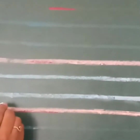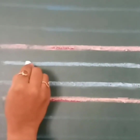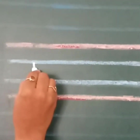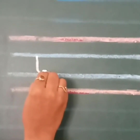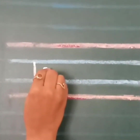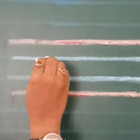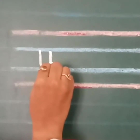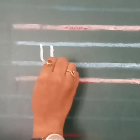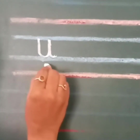Now let's see how to write script letter U. From the first blue line to the second blue line, make a standing line. Curve on the second blue line. Go up. Touch the first blue line. Come down on the same line. Touch the second blue line and make a small curve. Script letter U.